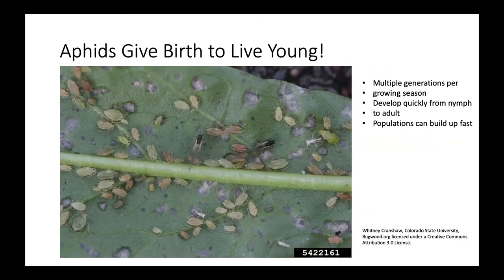Aphids give birth to live young — there is no egg stage. They come out and develop pretty quickly, with multiple generations per growing season. Populations can develop fast.